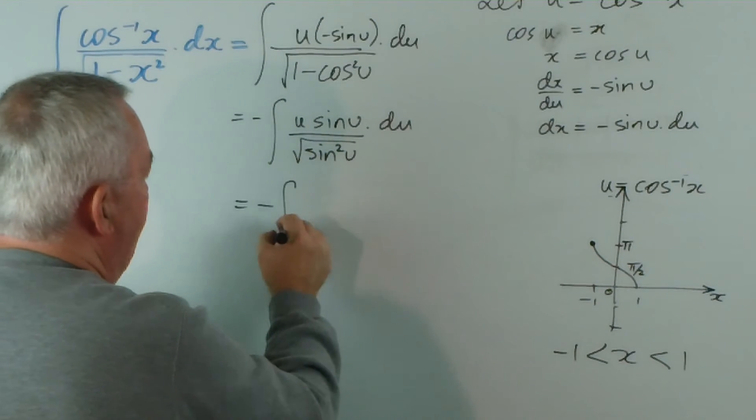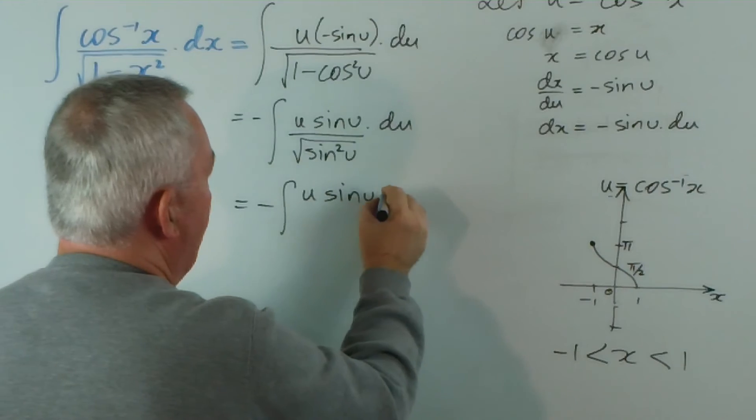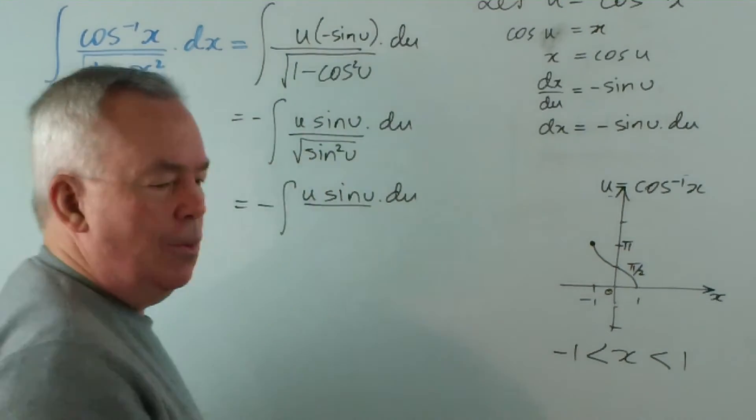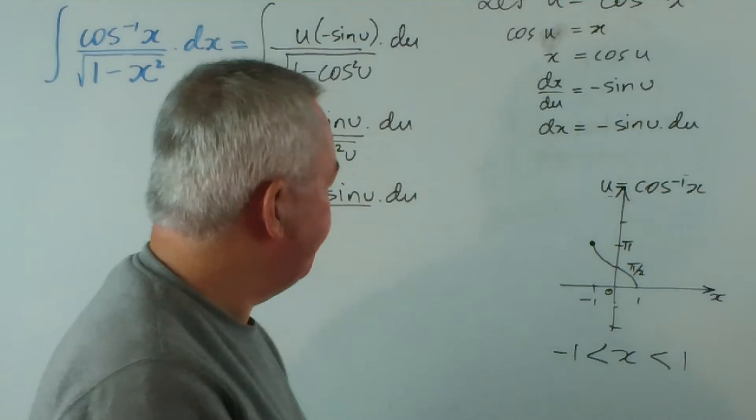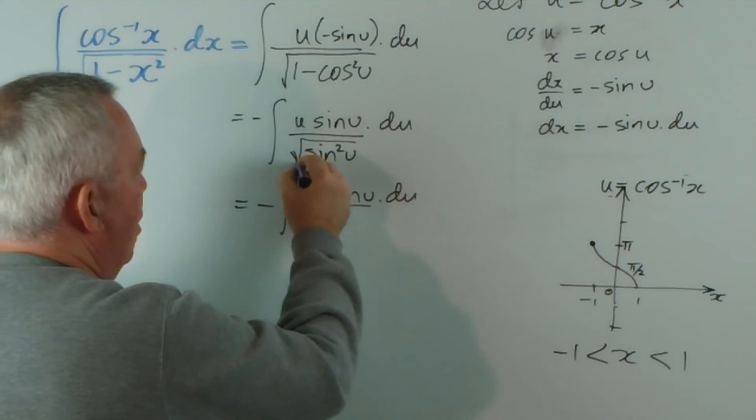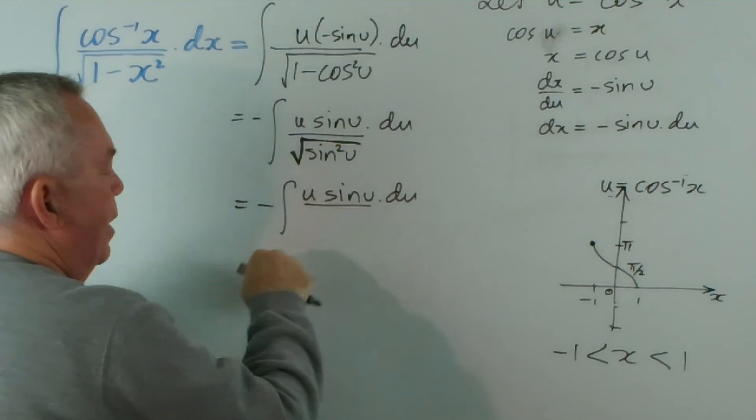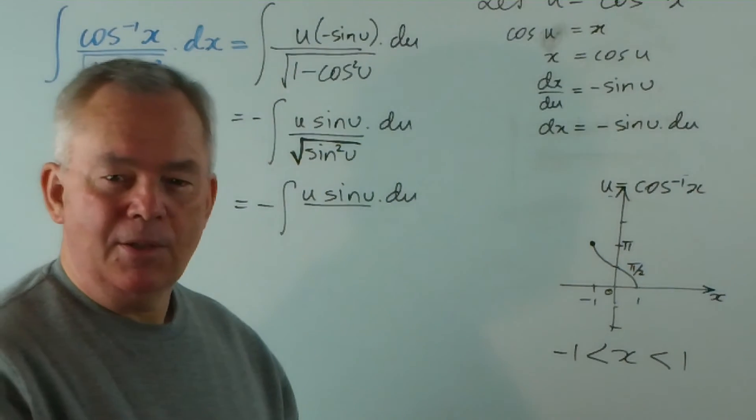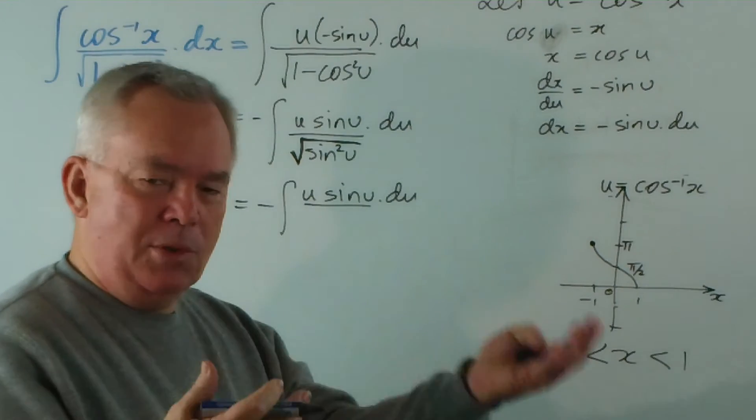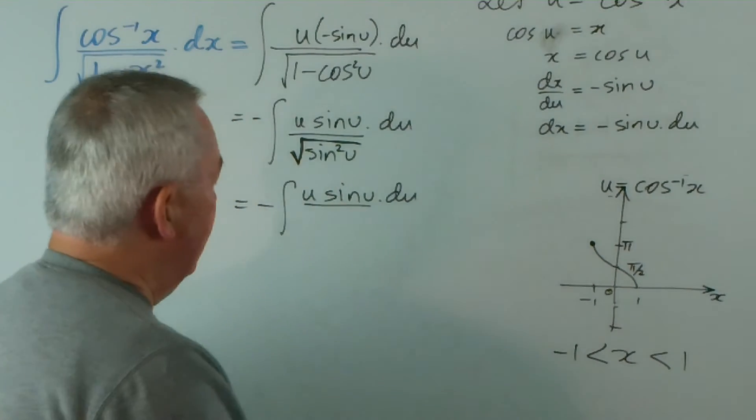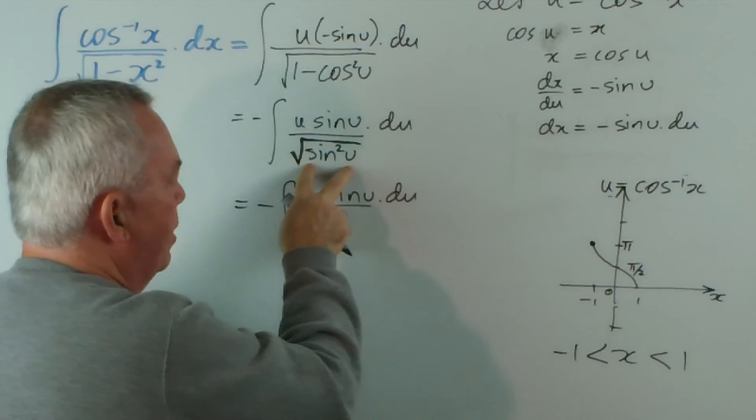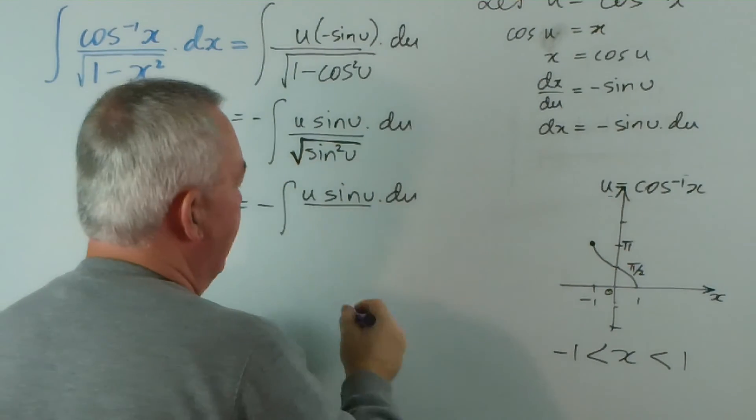And here's the bit that I wanted to talk about. When you take the square root of a square, or the square of a function, this means the positive root. Now if the function happens to have a negative value, then the positive root would be the opposite of that negative value. The way we overcome that is that we take the absolute value of sine u.